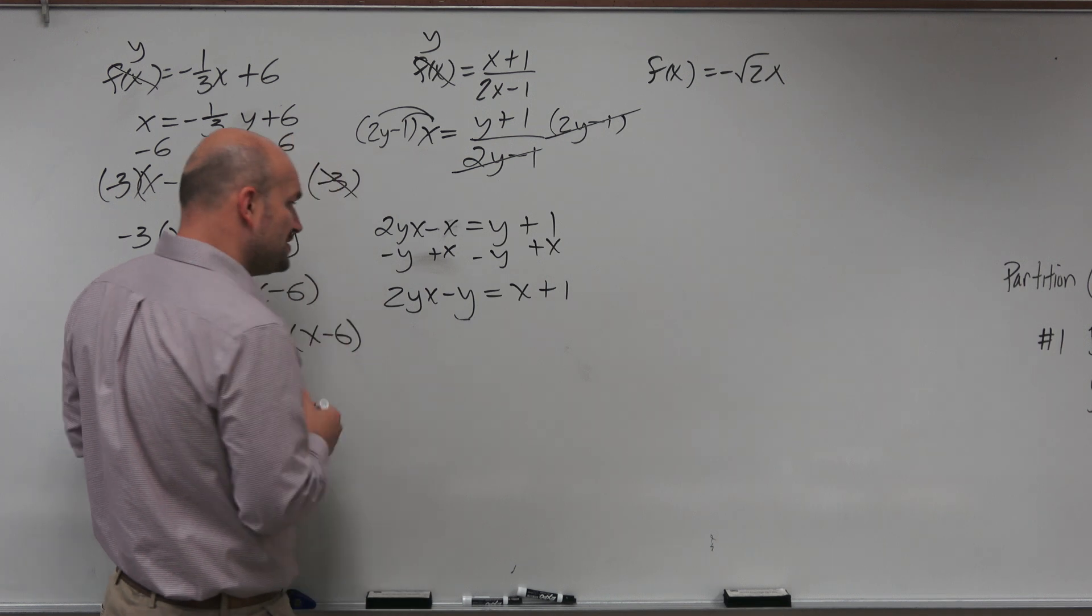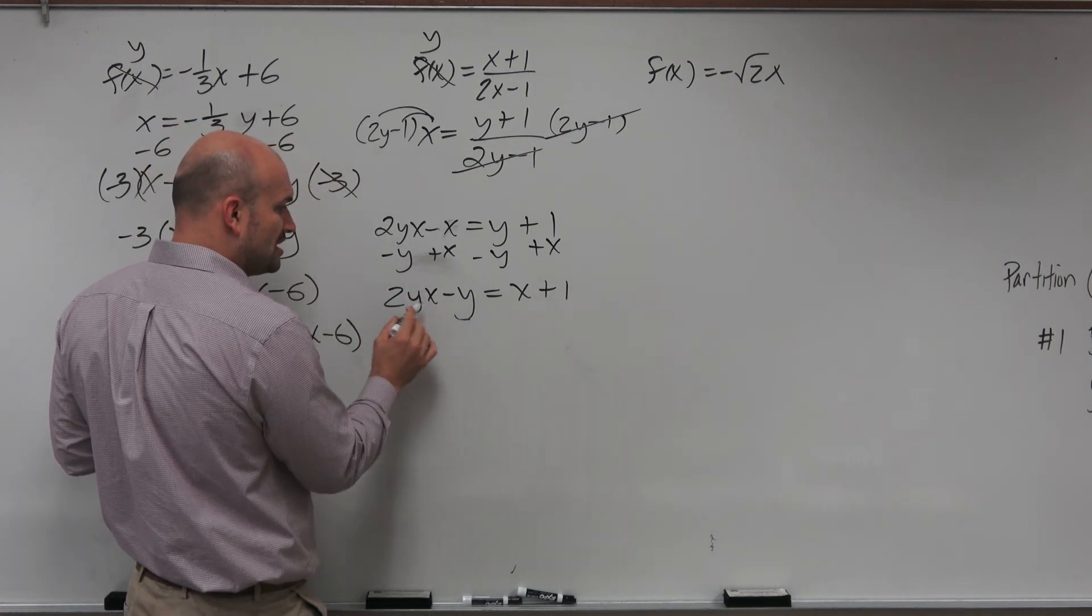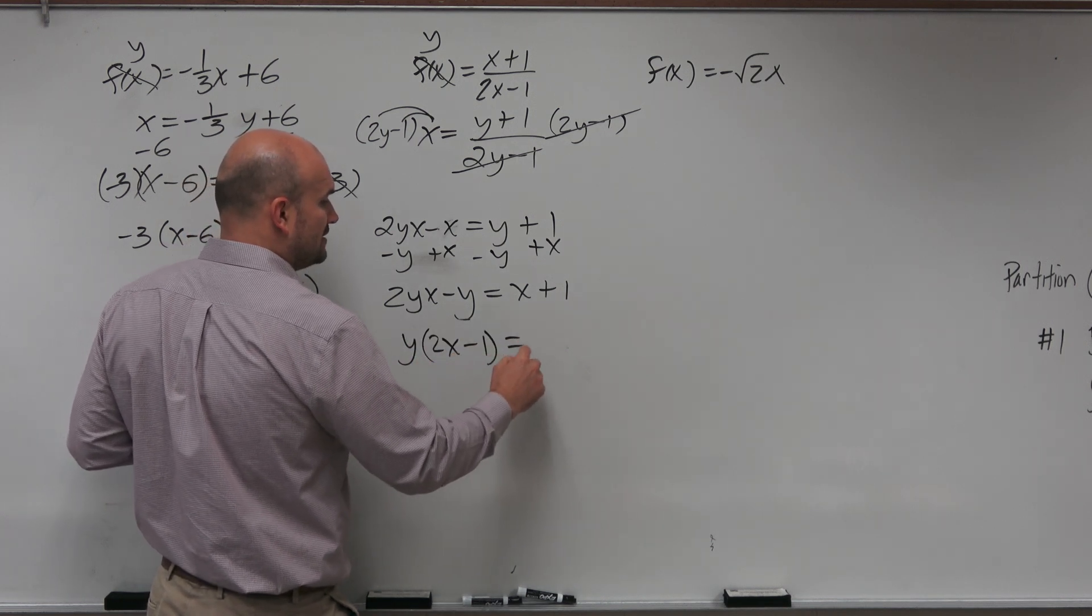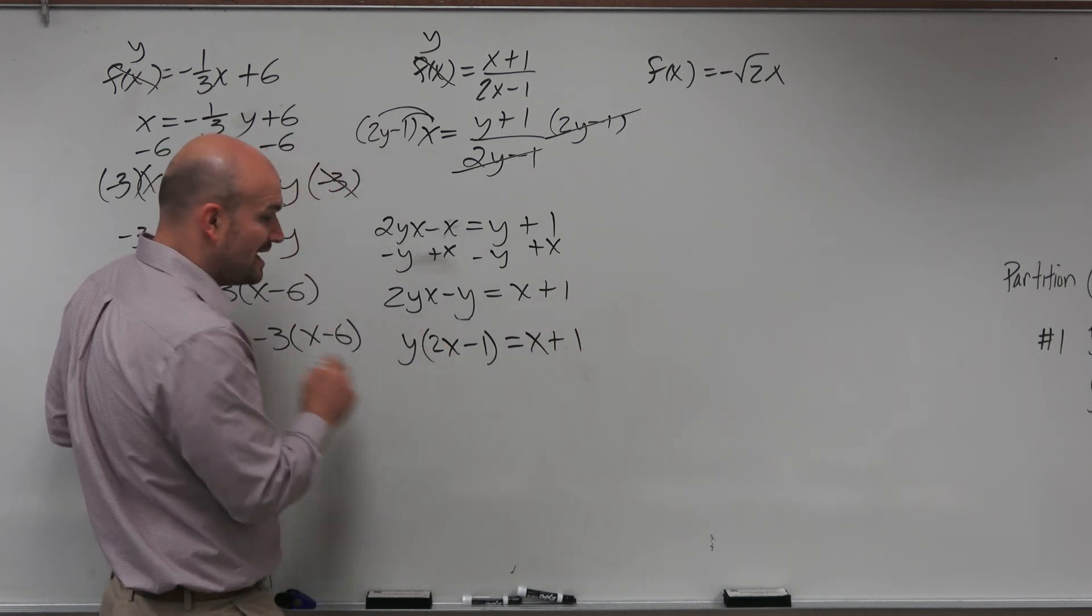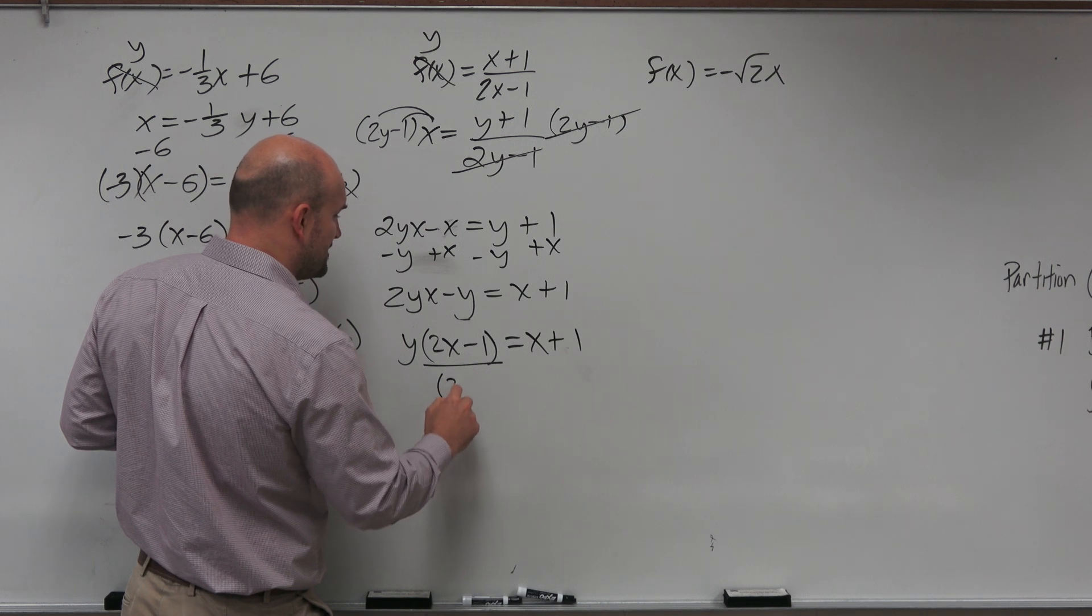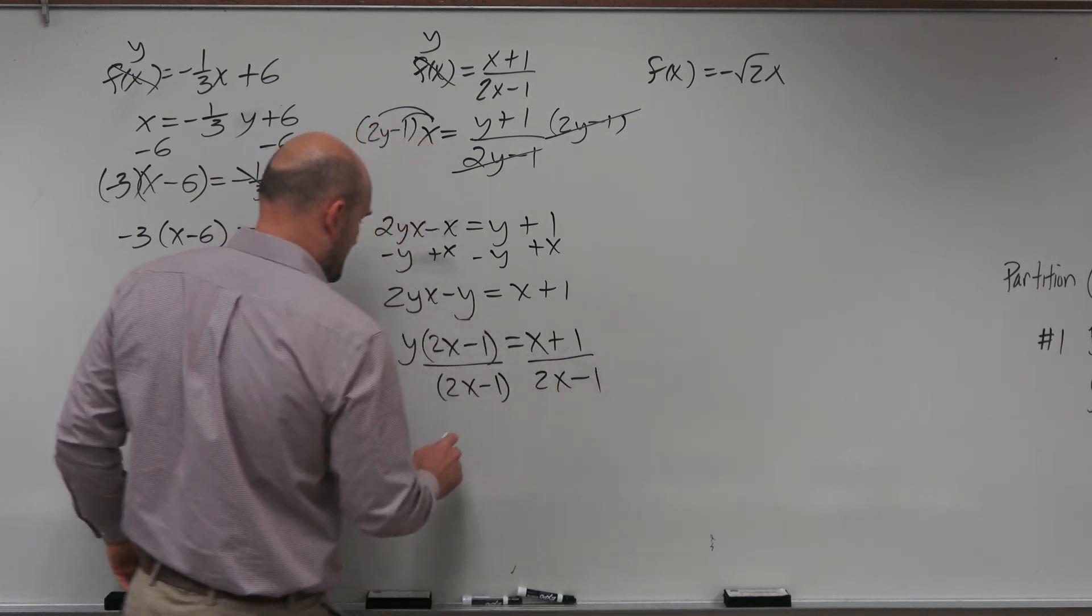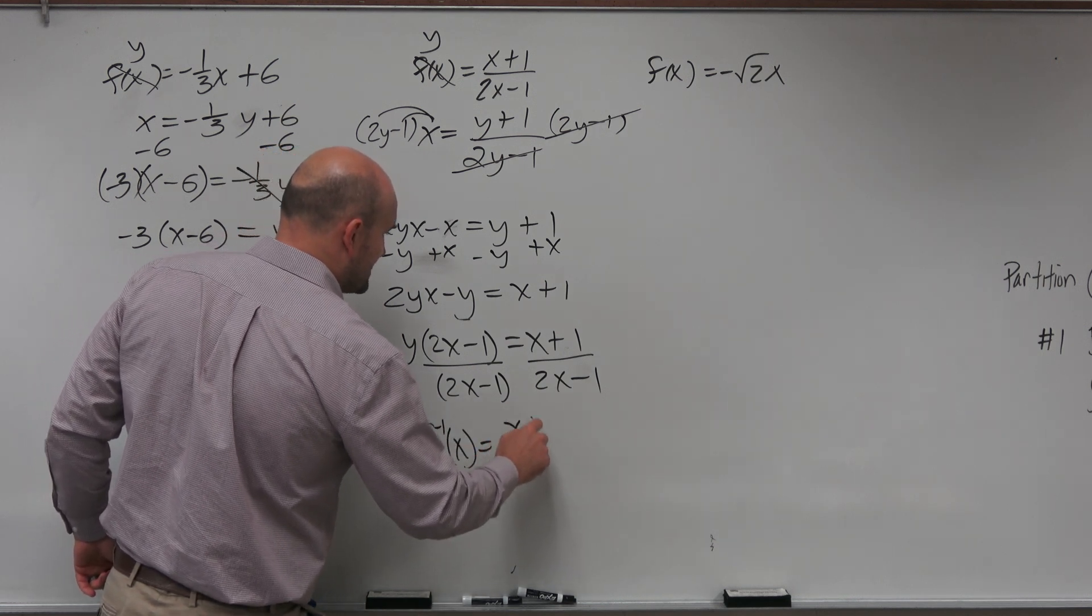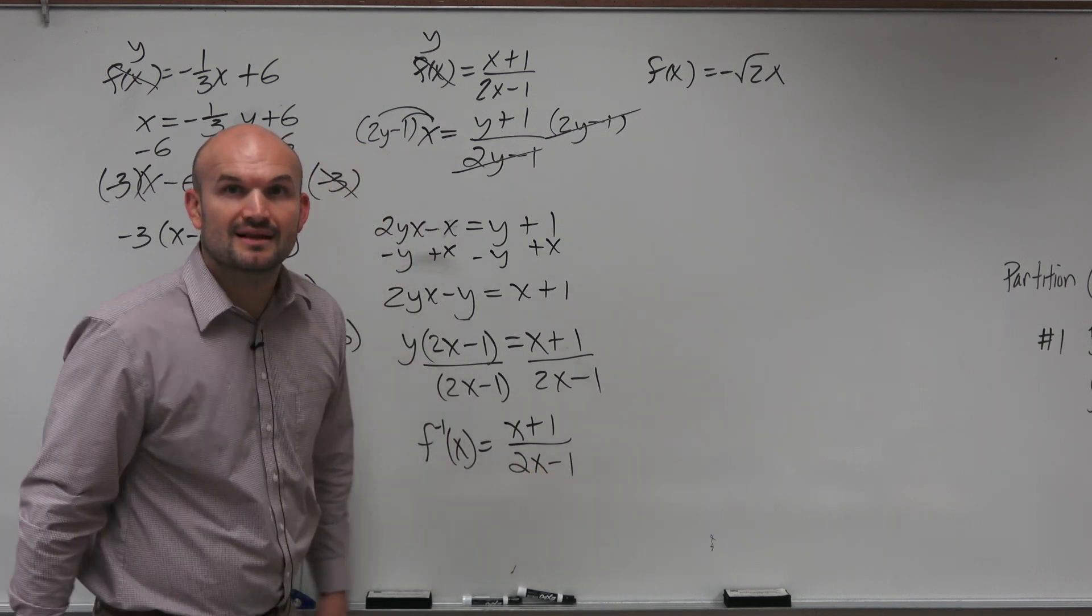And what you need to do is to solve this actually, is just to factor. So you're going to take the common term, which is a y, and factor it out. Now you're going to be left with 2x minus 1 equals x plus 1. And now you can see my variable y. To isolate it, I'm just going to divide by 2x minus 1. And therefore, I'll reintroduce my inverse notation. f inverse of x equals x plus 1 divided by 2x minus 1. And there you go.